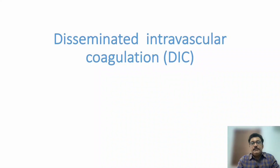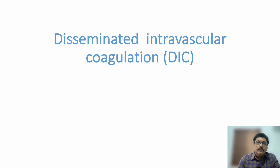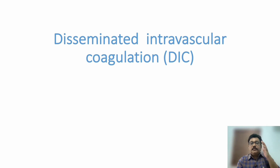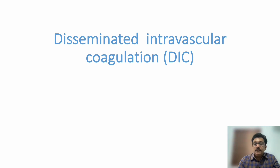Welcome to AATCM, the emergency medicine channel. Today let us discuss disseminated intravascular coagulation. This is one of the important differential diagnoses for TTP, HUS, and ITP. These conditions are very common in the emergency room, so knowledge about these diseases is very important. They are all emergencies but treatment is slightly different.